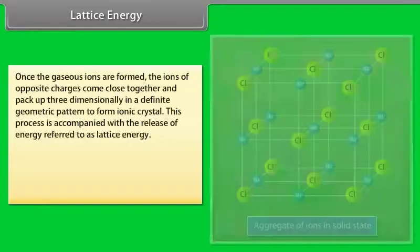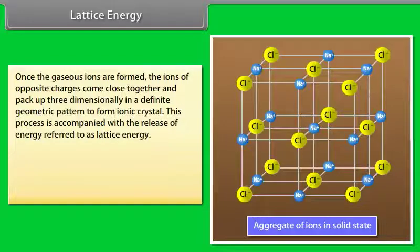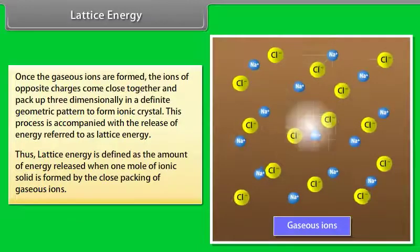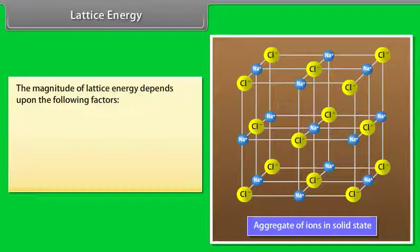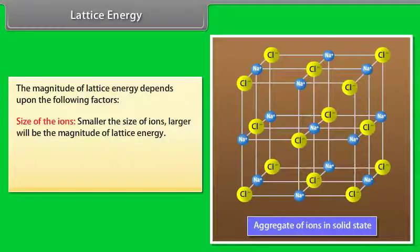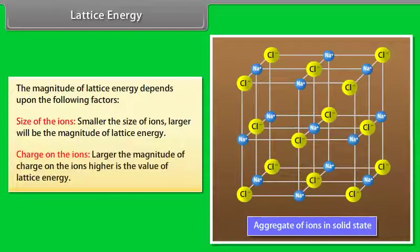Lattice energy: once the gaseous ions are formed, ions of opposite charges come close together and pack up three-dimensionally in a definite geometric pattern to form an ionic crystal. This process releases energy referred to as lattice energy. Lattice energy is defined as the amount of energy released when one mole of ionic solid is formed by the close packing of gaseous ions. The magnitude of lattice energy depends on the size of the ions — smaller ions have greater inter-ionic attraction and larger lattice energy — and on the charge on the ions — larger charges result in greater attractive force and higher lattice energy.